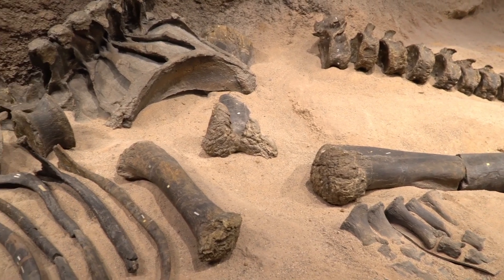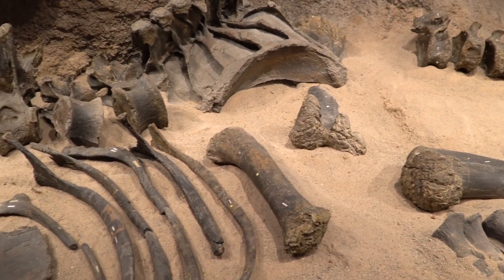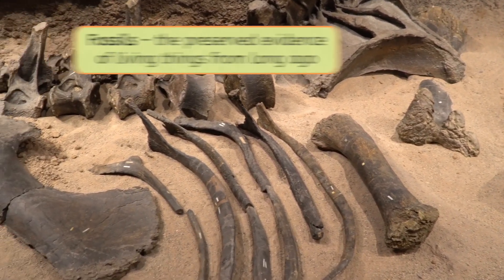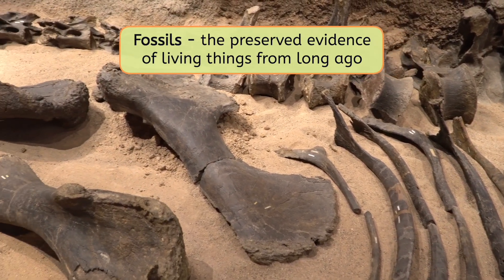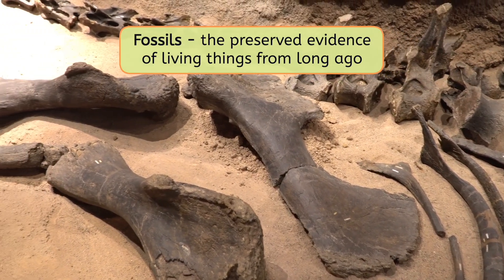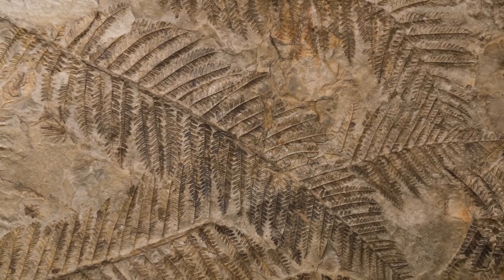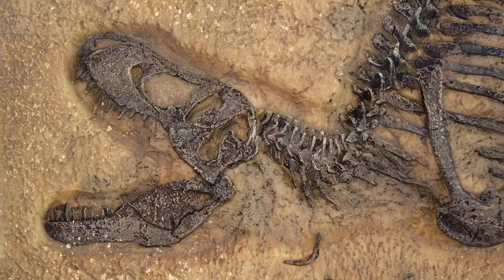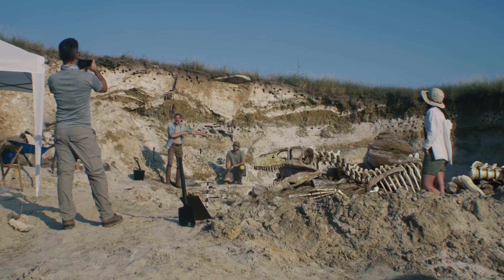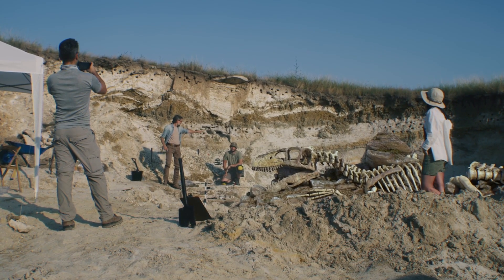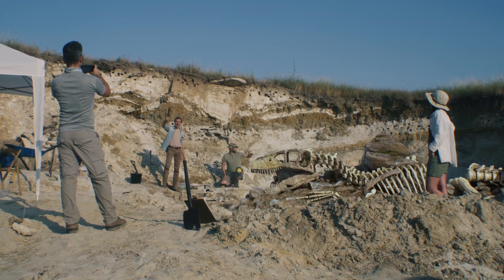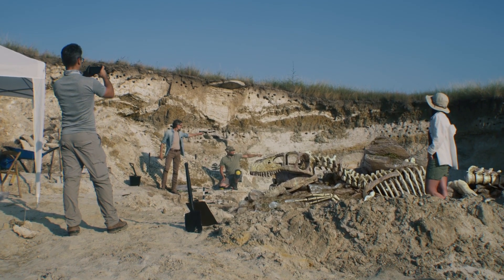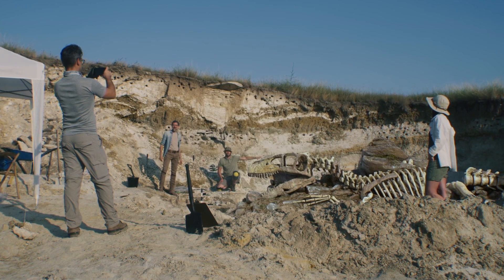Let's start with what we've actually uncovered here — a fossil. Fossils are the preserved evidence of living things from long ago. They can come from anything that was once alive: an ancient fern, a woolly mammoth, or even a T-Rex. You might be wondering why fossils always seem to be found in the desert when so few creatures live out here now. Well, to understand where to find fossils, we'll first need to understand how they form.